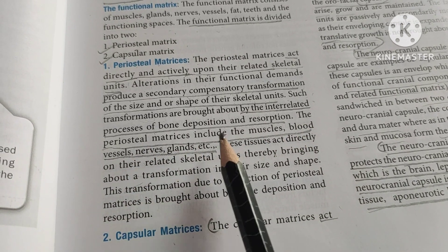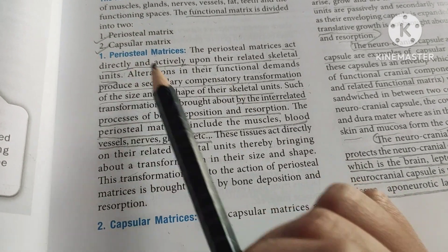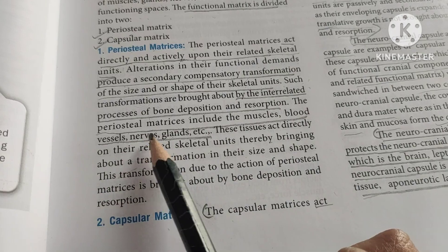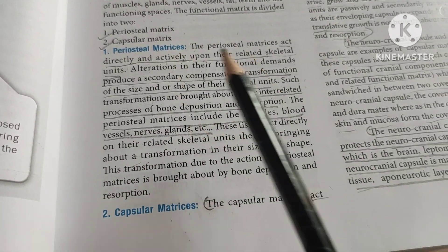The periosteal matrix includes muscles, bones, vessels, nerves, glands, etc.